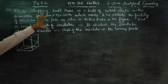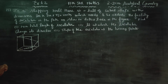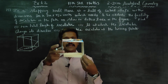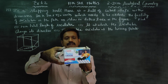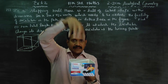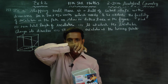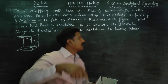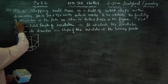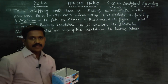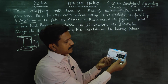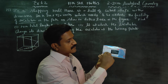This is the diagram given. This is a mall — this is the shape of the mall building. This is the ground floor going up to the first floor.